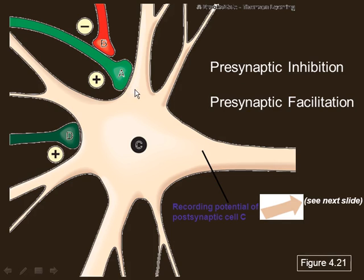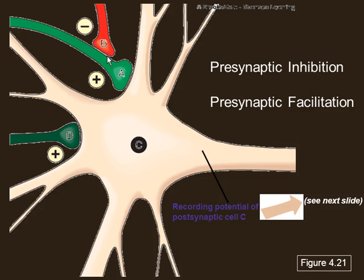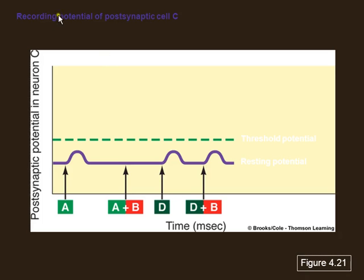The brain is an extremely complicated mass of neuron connections. Originally, scientists thought the brain was one neuron that just curled around. What they discovered is that neurons end and begin — they're all connected. When they started counting neurons, the numbers were staggering. The scientist who won the Nobel Prize for this discovery — Golgi — was ridiculed for most of his life because nobody believed it.